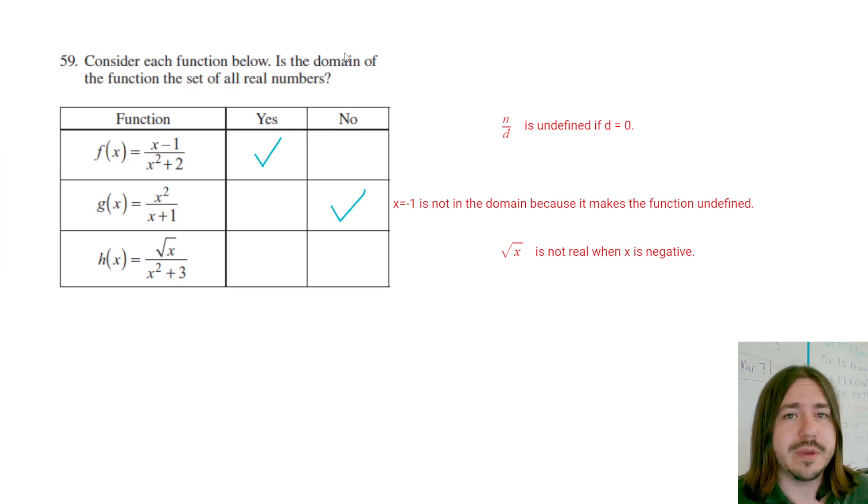You've got to be able to pick any real number, including negatives, and get a real value out of it. But if I plug in something like negative two here, the square root of negative two is not real. So negative two is not going to be in the domain of this function, so this is going to be another no.